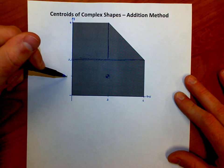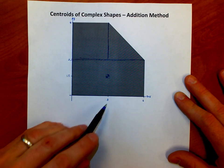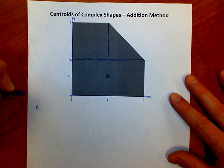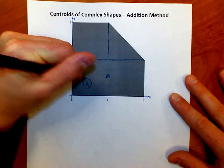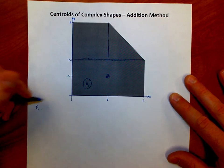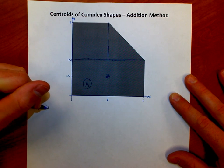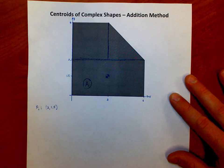That would be an X coordinate of three. And then for rectangles, it's halfway over, halfway up. So three, 1.5. I'm going to call this area one. Area one has an XY coordinate of three, 1.5.